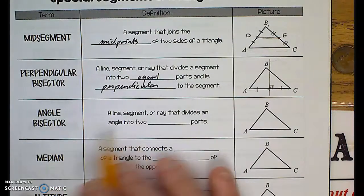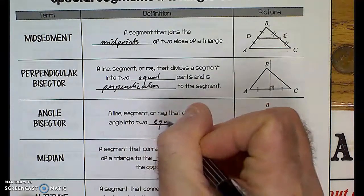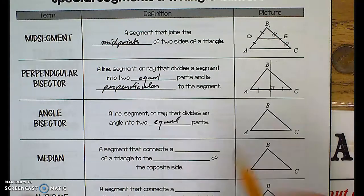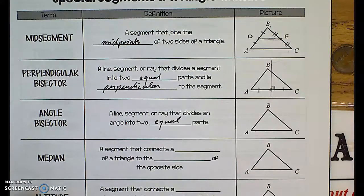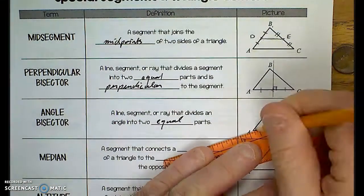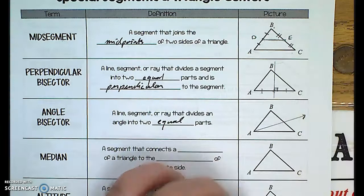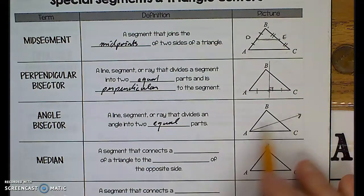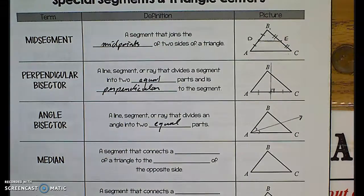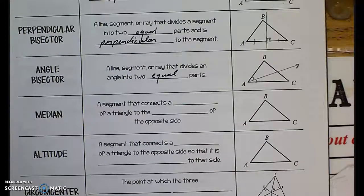The angle bisector is a line, segment, or ray that divides an angle into two equal parts. If I take an angle and draw a ray from its vertex, that ray is an angle bisector if it divides the angle into two equal parts. I'm just sketching it — it's probably not precise — but that's another line we can draw within a triangle to derive new properties.